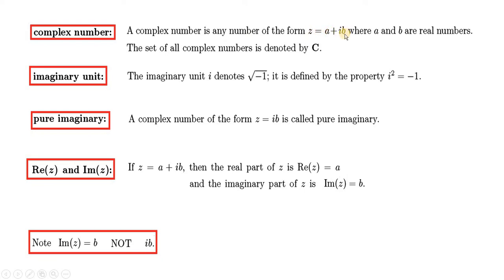A complex number is any number of the form z = a + ib, where a and b are real numbers. The set of all complex numbers is denoted by C. The imaginary unit i denotes √(−1); it is defined by the property i² = −1.